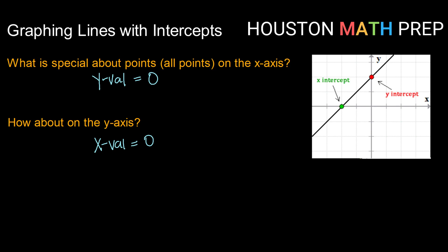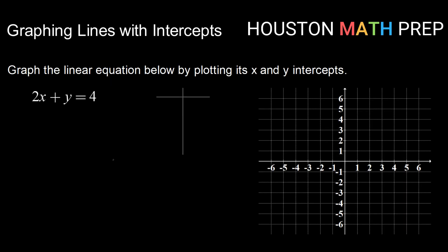So let's take a look at an example. Graph this linear equation 2x plus y equals 4 using its x and y-intercepts. So this is going to be similar to graphing using points, but not just any old points. We're going to use our intercepts. So if I want to find my x-intercept, I'm going to look at what happens when y is zero. And if I want to find my y-intercept, I'm going to look at what happens when x is zero.